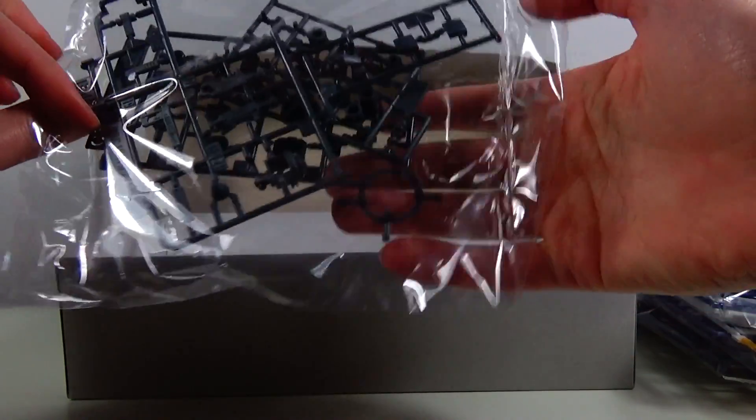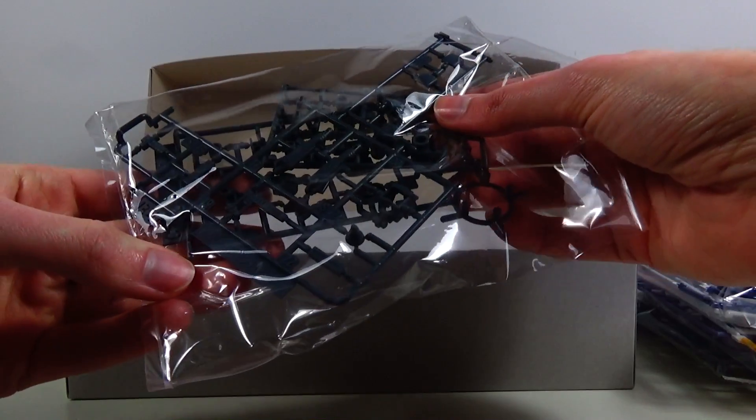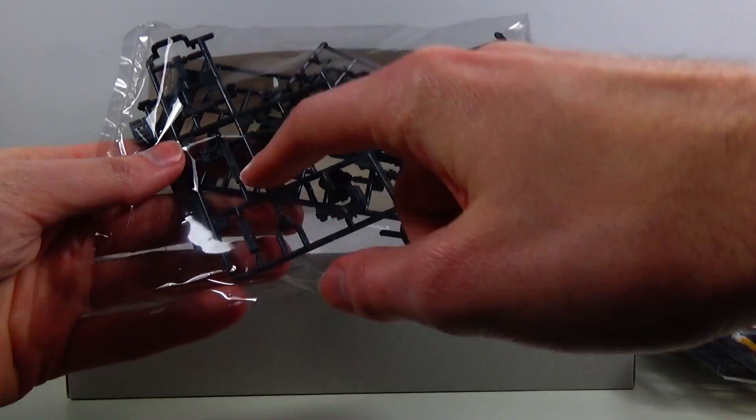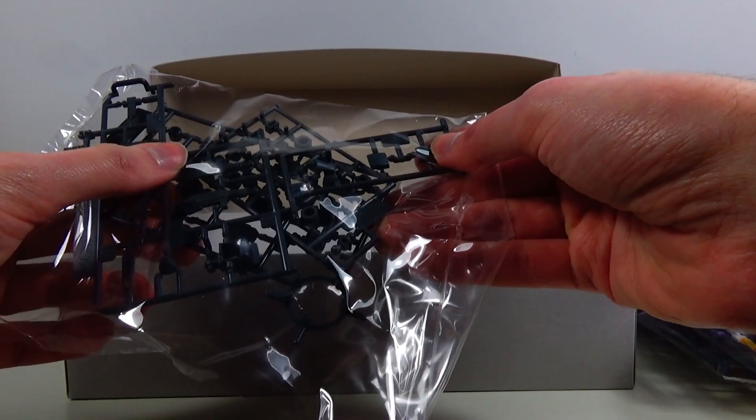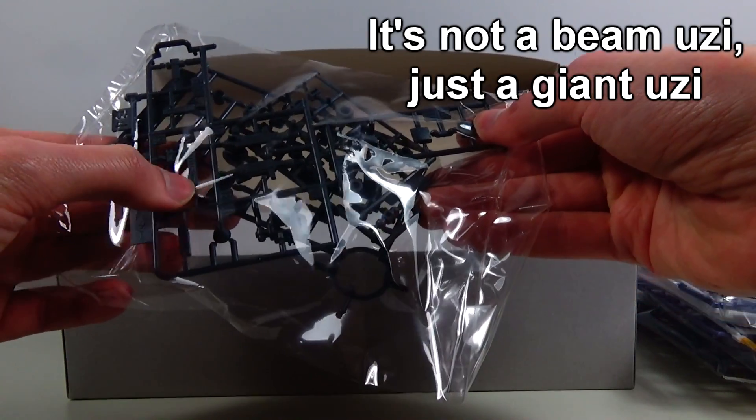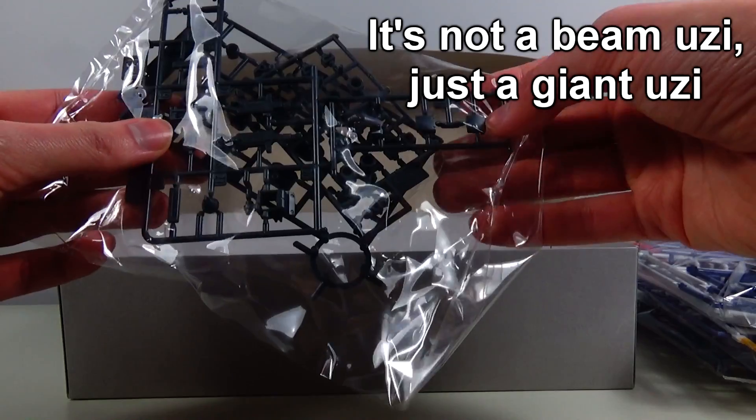And we get some more internals from the ground gym, I'm going to assume. Oh no, this is from the Pixie itself because it has that, basically it has a beam Uzi with beam dagger that you can attach to it.